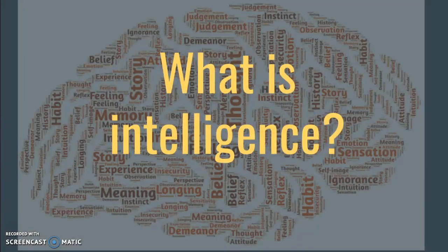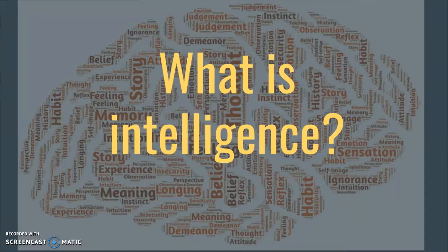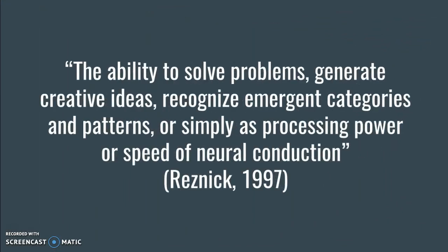So what is intelligence? Despite all these theories, it's still something we can't define properly. Is intelligence a single factor, or does it have several facets? In scientific circles, the discussion is lively and ongoing — there isn't widespread consensus, and it varies depending on discipline and socio-cultural context. Certain types of intelligence becoming more widespread cannot be measured, such as creativity, divergent thinking, emotional, and social intelligences. For the sake of this video, we will define intelligence as the ability to solve problems, generate creative ideas, recognize emergent categories and patterns, or simply as processing power or speed of neural conduction.